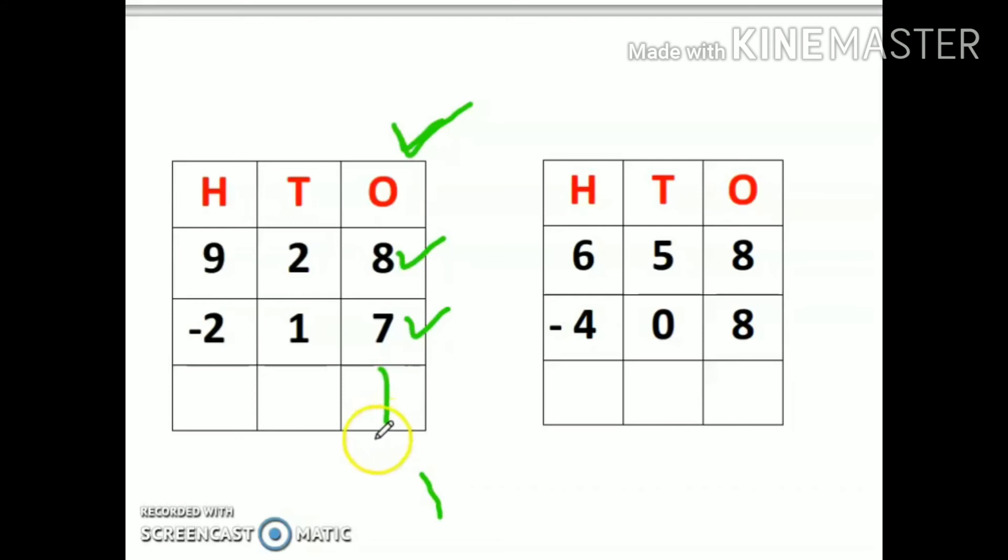Next one, two minus one. Start from two, three, four, five, six, seven, eight, nine. Count one, two, three, four, five, six, seven. Seven is my answer.